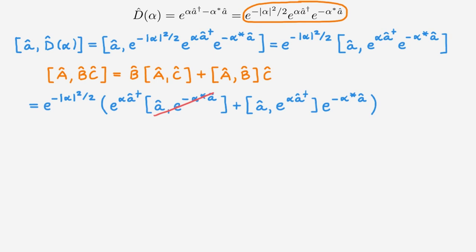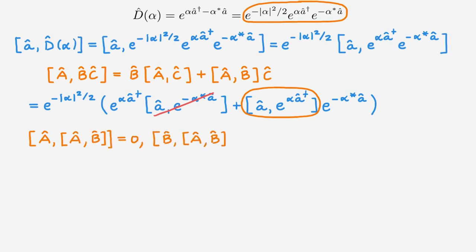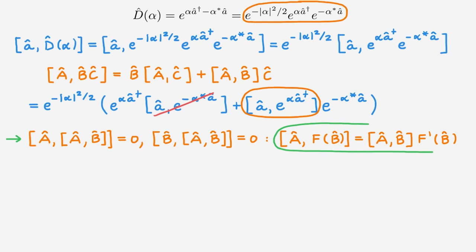The second commutator is trickier. To evaluate it, we need another result from the video on functions of operators: if two operators A and B each commute with their commutator, then the commutator of A with a function f(B) equals the commutator of A with B times the derivative of f(B). In our case, A and B are the ladder operators, and we've already established that they obey these two conditions because their commutator equals the scalar 1.